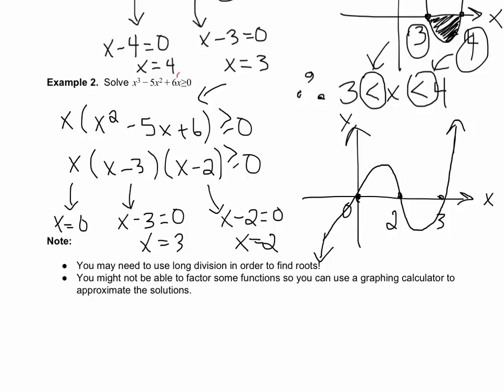Now what we want to do again is look for where our graph is greater than or equal to 0. It's greater than or equal to 0 between 0 and 2, and any value above or equal to 3. That means our solution is going to be 0 ≤ x ≤ 2 and x ≥ 3. We're using the greater than or equal signs now because our problem also has greater than or equal to signs.